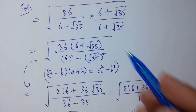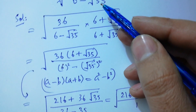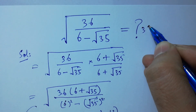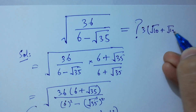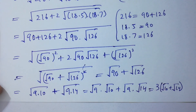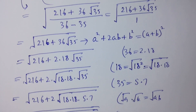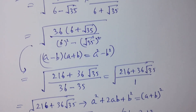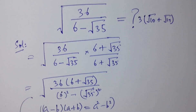So we can say the square root of 36 over (6 minus square root of 35) is equal to 3 times (square root of 10 plus square root of 14). Thanks for watching this video. Please subscribe to this channel to get notifications of new videos, and don't forget to share with your classmates and friends. You can also visit the playlist to learn more.